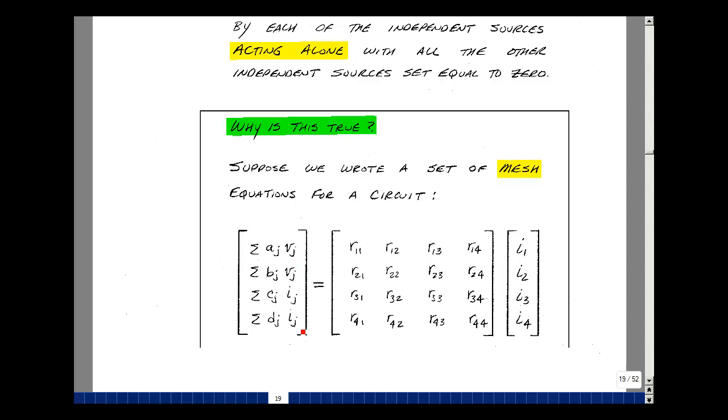And suppose the same is true for mesh number two. Then in meshes three and four, suppose they have current sources in it. And again, we read some kind of relationship between the current sources and the mesh currents. Now the units and the elements in here would be in ohms if we have voltage in terms of current, and if we have current in terms of current, the units here would be dimensionless.